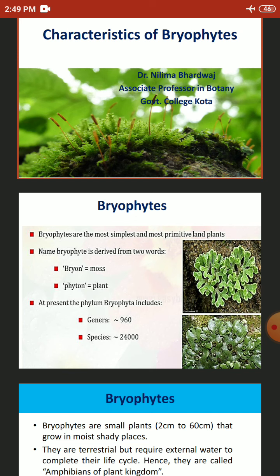At present, the phylum bryophyta includes 960 genera and approximately 24,000 species. Bryophytes are small plants that grow in moist, shady places. They are terrestrial but require external water to complete their life cycle. Hence, they are also called the amphibians of the plant kingdom.